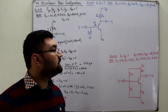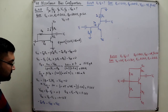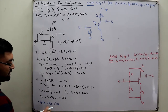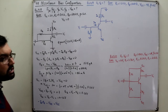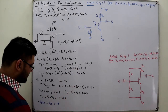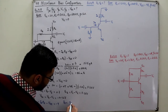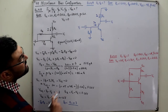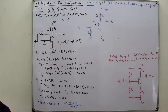Since VEE is negative 9 volts, I'll directly write it as negative 9. So: negative IB·RB minus VBE equals negative 9, which gives IB = (9 minus VBE) / RB = (9 minus 0.7) / 100kΩ. IB comes out to be 83 microamperes.